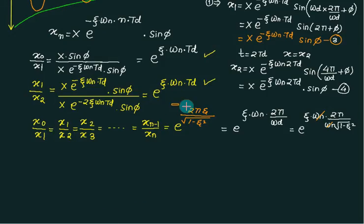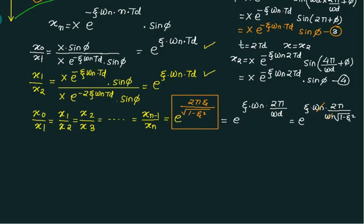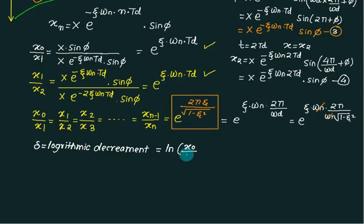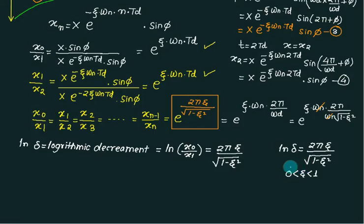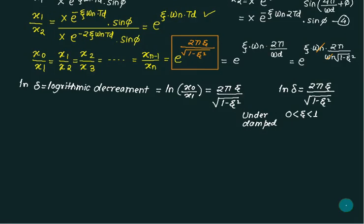Remember this equation: the ratio equals x0 by x1. A new term delta is introduced, called the logarithmic decrement. Delta is defined as the natural log of x0 by x1, and also equals ln of x1 by x2. Taking the natural log of the ratio gives delta equals 2 pi zeta divided by square root of 1 minus zeta squared. In general, delta equals ln of xn minus 1 upon xn. This is valid only for 0 less than zeta less than 1, which is the underdamped system. That completes the derivation.